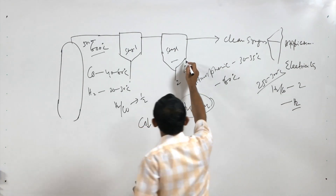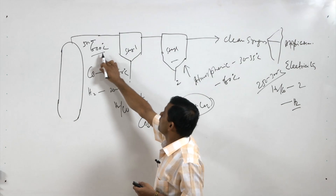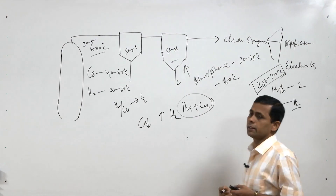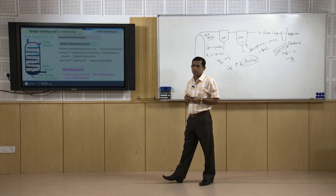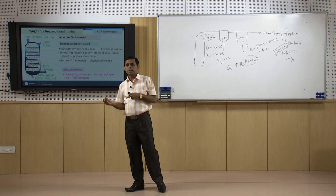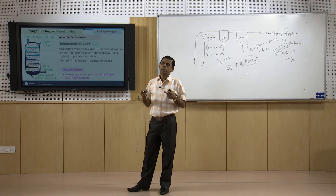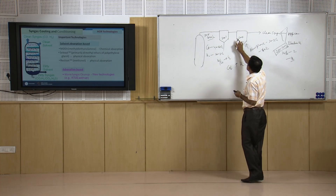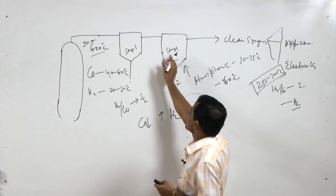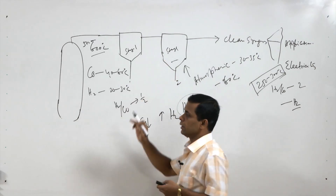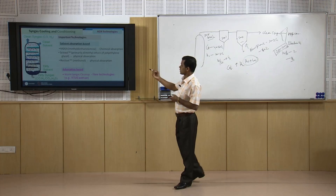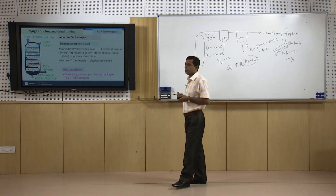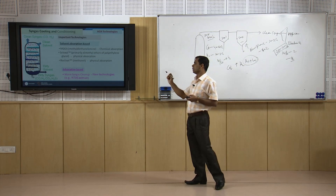If we use a conventional absorption process we obviously have to reduce the temperature below atmospheric, and then we have to increase it again to 250 to 300 degrees centigrade for particular applications. This temperature cycling reduces overall process efficiency. If instead a process can be developed to separate H2S and CO2 at warm conditions — a warm clean process based on adsorption — that would be more economically feasible and attractive, but this is the latest development and very few commercial plants exist on this technology.